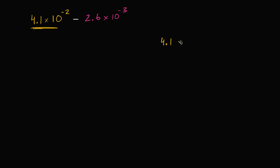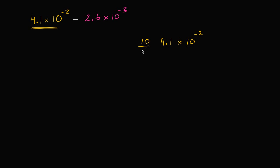We have 4.1 times 10 to the negative 2. To go from 10 to the negative 2 to 10 to the negative 3, we divide by 10 — but we must also multiply by 10 to preserve the value. Writing it as 10 over 10 times the expression: 10 times 4.1 is 41, and 10 to the negative 2 divided by 10 is 10 to the negative 3. So this equals 41 times 10 to the negative 3. That makes sense — 41 thousandths equals 4.1 hundredths.